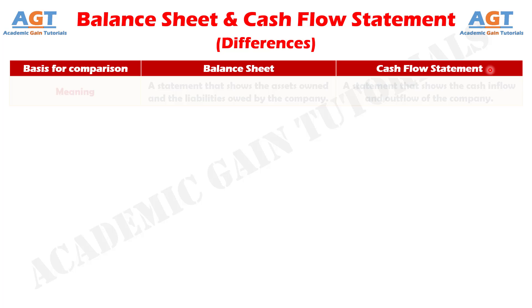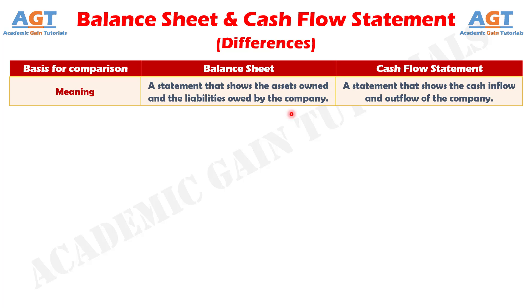Difference No. 1: A Balance Sheet is a snapshot of assets possessed and outstanding liabilities of the entity. Whereas, Cash Flow Statement reflects the movement of cash during the year.